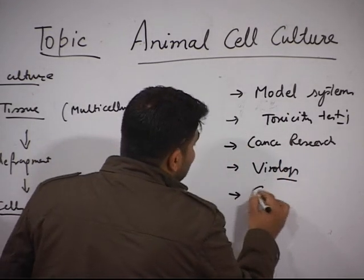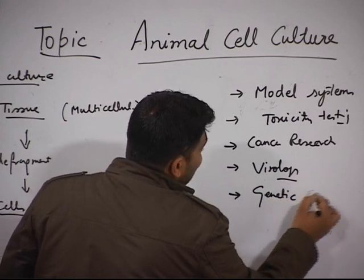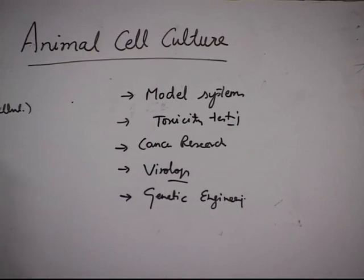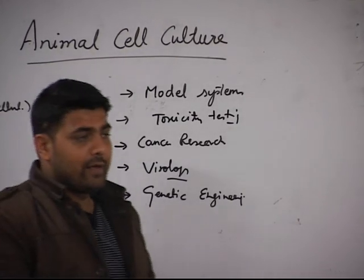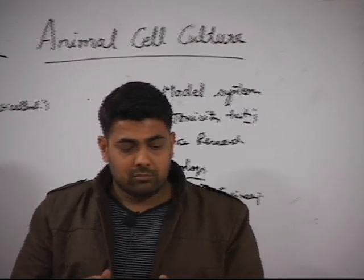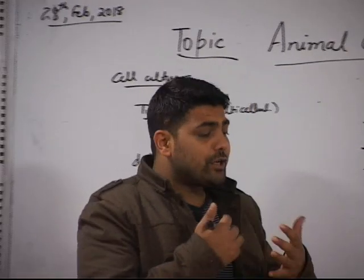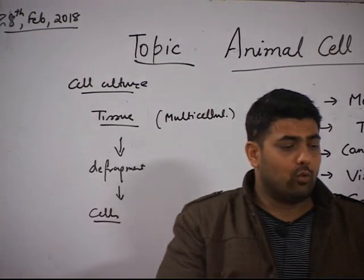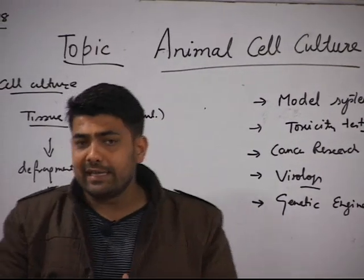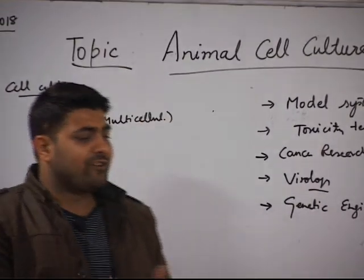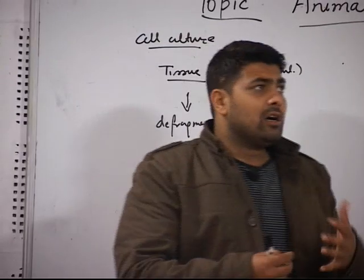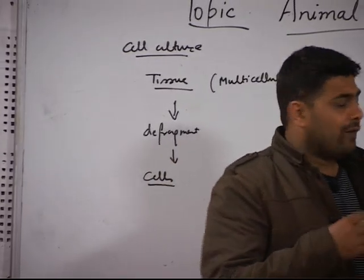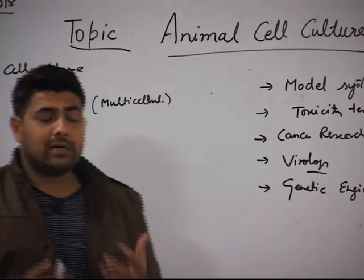Animal cell culture is very useful in techniques such as genetic engineering, which is an important technique for obtaining products of commercial value. For example, it can be used in vaccine production against rabies, chickenpox, and hepatitis. We are virtually using cells as bioreactors for getting products of our desired use.